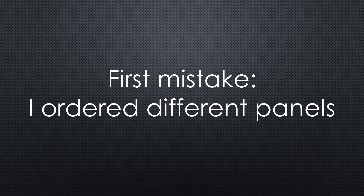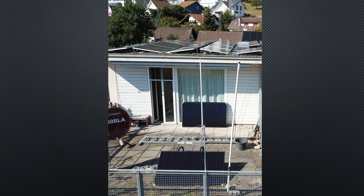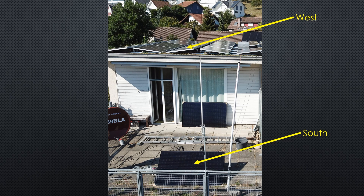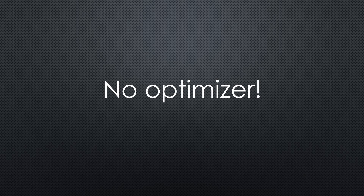So let's test if the underlying claim is correct. I ordered four 360W panels for an extension project. These are smaller than my 450W panels on the roof — my first mistake. As a first test, I place one of these excess panels towards the south and connect it to the west string, so it points 90 degrees away from all other panels. To make my mistake even bigger, I place it at a different angle towards the sun — 34 versus 15 degrees. And of course, without an optimizer. Every decent PV specialist would send me straight to hell for these crimes.